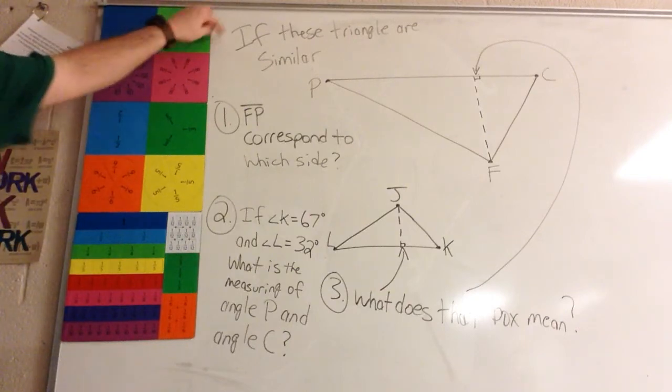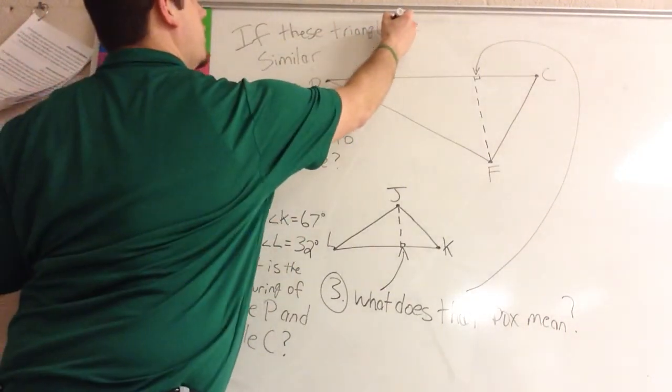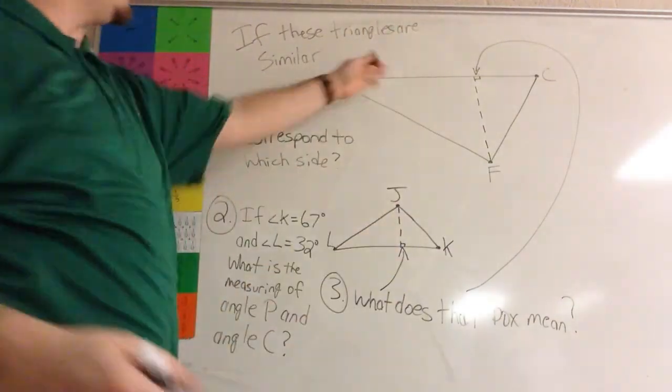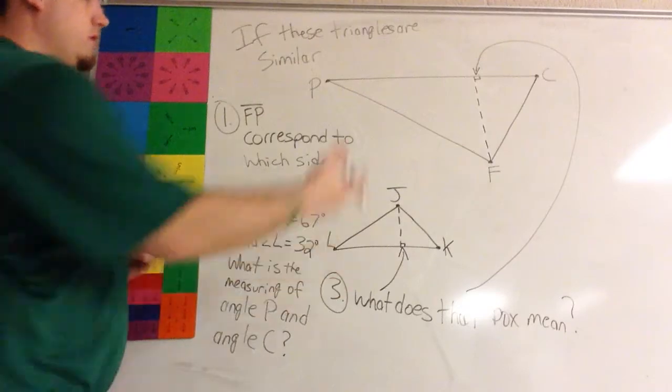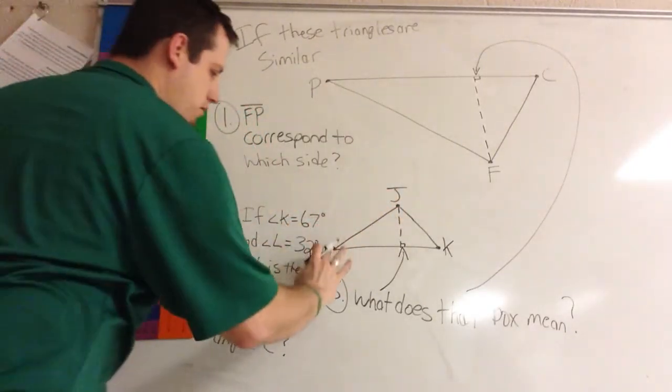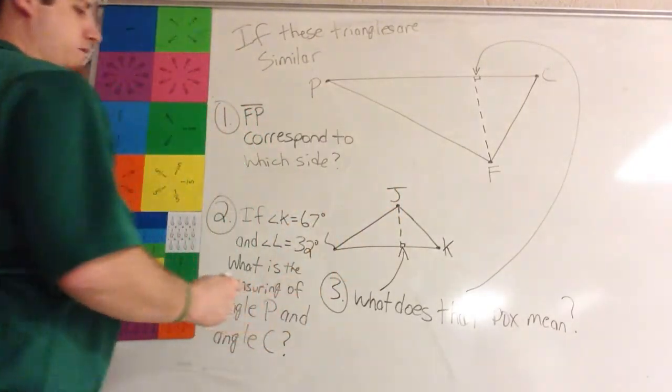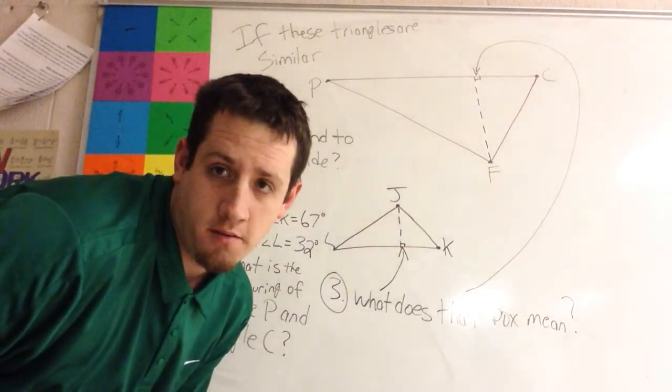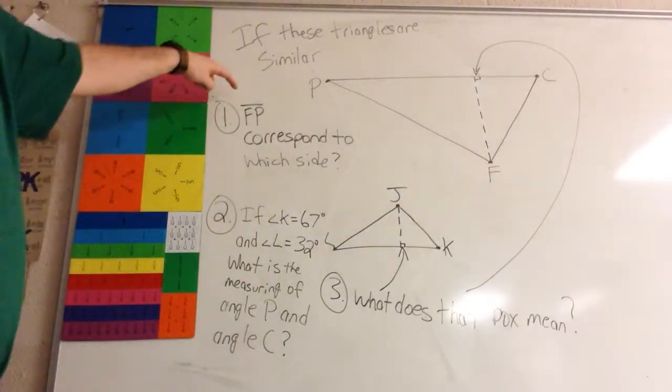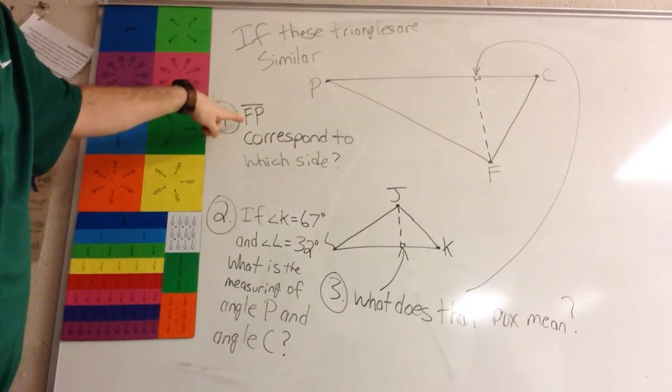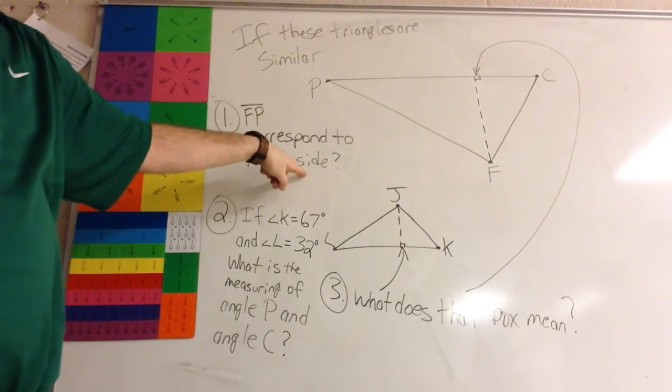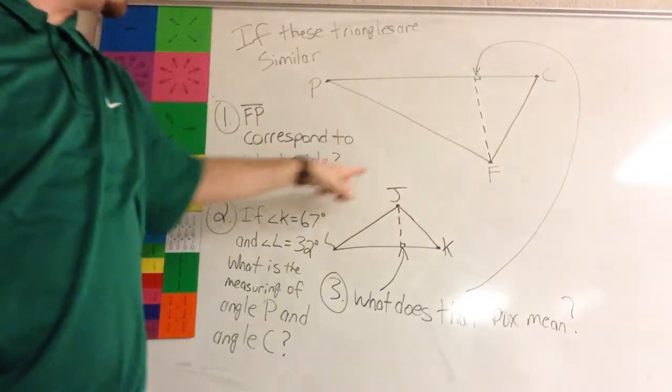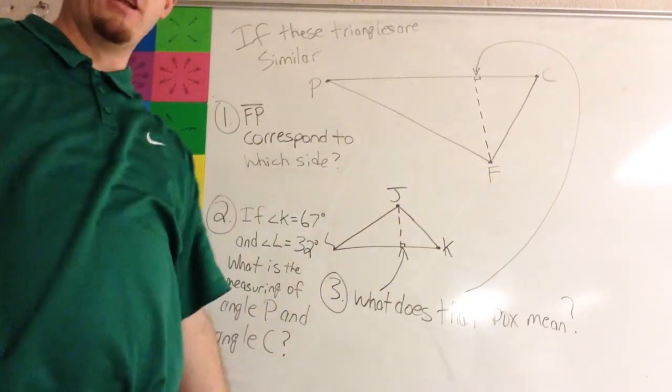Alright, make sure you can see all of it. There we go. I'm going to read it. If these triangles are similar. So if you believe that they are, just based on the way they look. This triangle here and this triangle here. If you believe they're similar, then answer these questions. If you don't think they're similar, then don't worry about it. Okay? Hint. They're similar. Question number one. That side FP corresponds with which side. Okay? So you've got side FP. Right here. It's going to correspond with one of these sides down here. You've just got to choose which side.